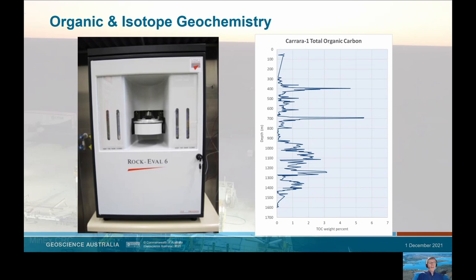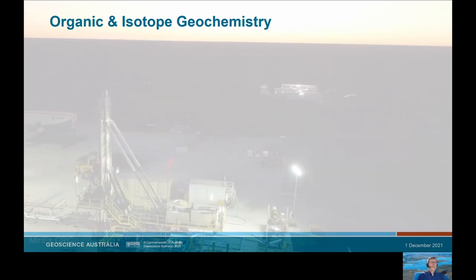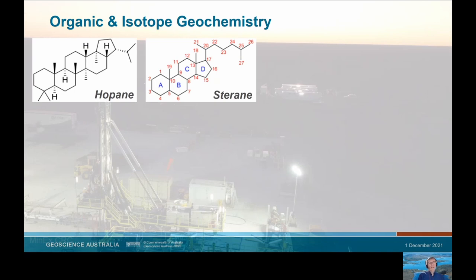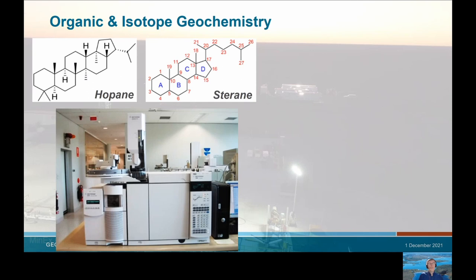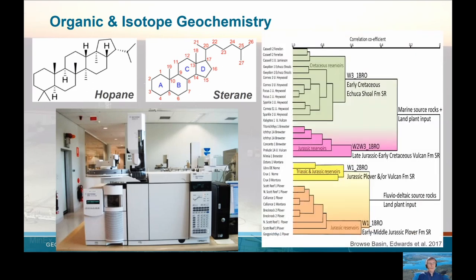The next question the laboratory can answer is what type of hydrocarbons are present, how they formed, and how they evolved and migrated. To do this, the organic laboratory analyses for biomarkers — essentially chemical fossils left behind when organic matter decays — such as hopane and sterane molecules. Using gas chromatography we build up a picture of how hydrocarbons in a region formed and how they are related. For instance, an example from the Brows Basin offshore northwest Australia shows relationships between reservoirs sourced from marine organic material compared to deltaic or terrestrial material. We can also trace these using isotopic signatures, looking at ratios of carbon, nitrogen and hydrogen isotopes — remarkably, a rock hundreds of millions of years old can tell you what sort of plant or marine organism was there at the time.